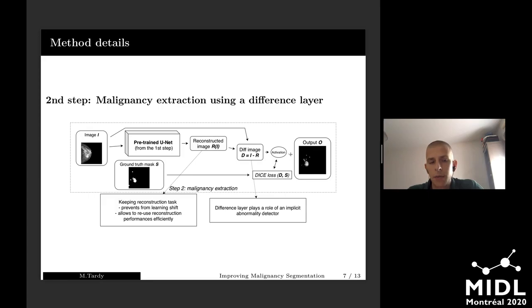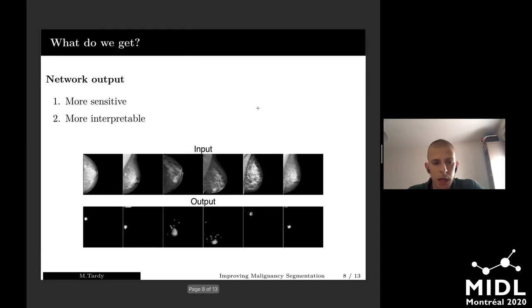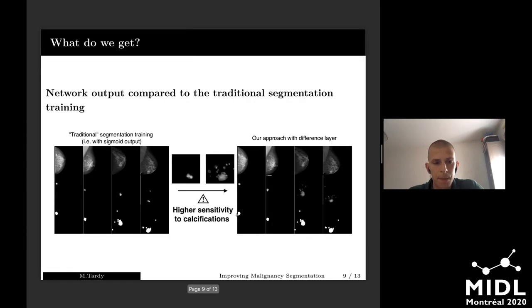By consequence, we obtain something that is much more interpretable and especially more sensitive. As we can see here, we have an output that contains straight the calcifications and masses right away without the need of any kind of preprocessing. Compared to traditional segmentation training,